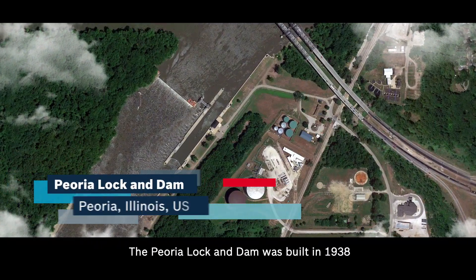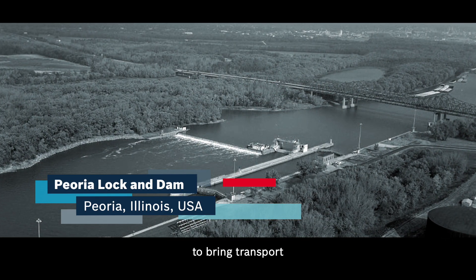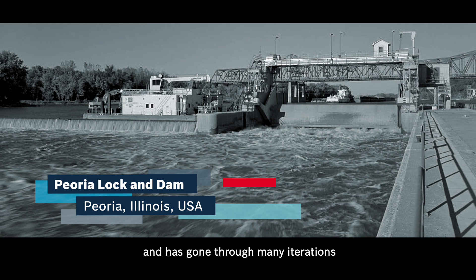The Peoria Lock and Dam was built in 1938 as part of the Illinois waterway to bring transport from Michigan down to Mississippi and has gone through many iterations during the years.